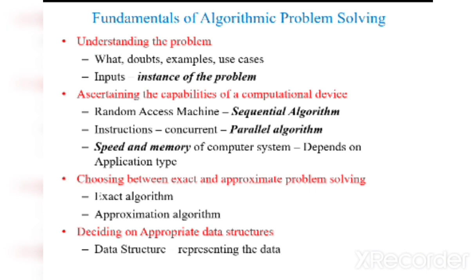In parallel algorithm, we'll be executing instructions parallelly, that means more than one at a time. Based on that, we will be selecting whether we have to operate on sequential or parallel algorithm. Next, parameters: speed and memory of the computer system. This depends upon the application type.